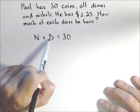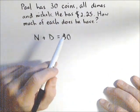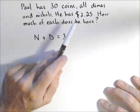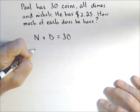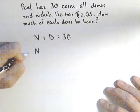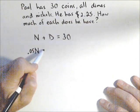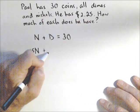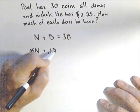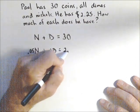So there's our amount equation. Now we're also going to have a value equation because we know it's $2.25. So the number of nickels times the value of a nickel, 0.05, will give us the total amount in nickels. And similarly with dimes, 0.1 times D has to equal our 2.25.